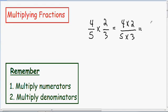In our numerator we have 4 times 2 which is just 8. In our denominator we have 5 times 3 which is 15. And this is our final answer.